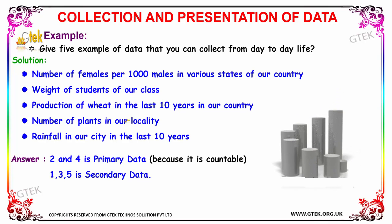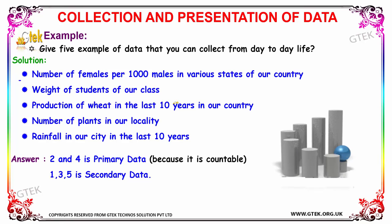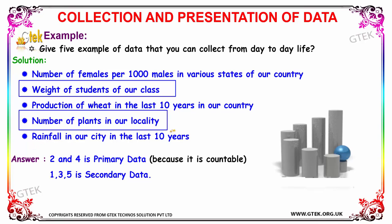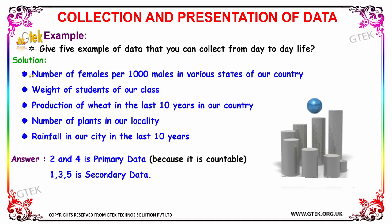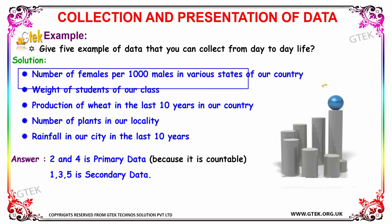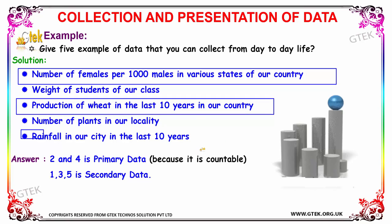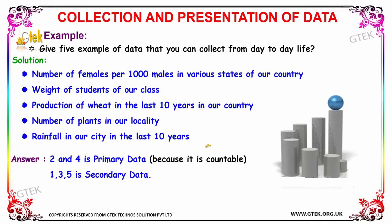We now categorize these five examples into primary data and secondary data. The second example — weight of students of a class — is primary data because it can be measured or counted. Similarly, the fourth example — number of plants in our locality — is also countable, so both the second and fourth are primary data. The first example, number of females per thousand males, is secondary data. Likewise, production of wheat and rainfall in the city over the last 10 years are also secondary data. This is how we differentiate primary and secondary data from examples.